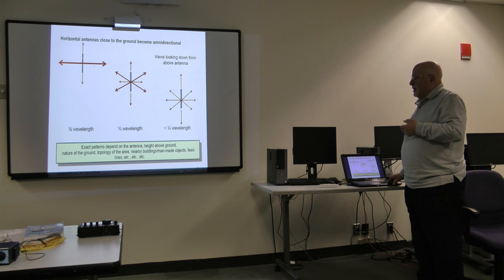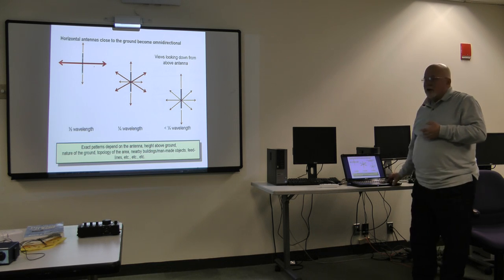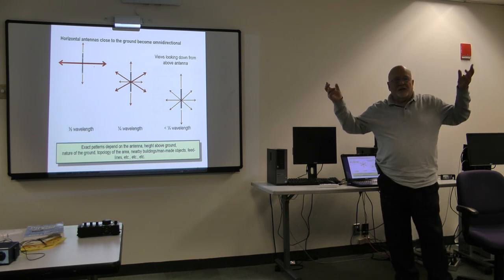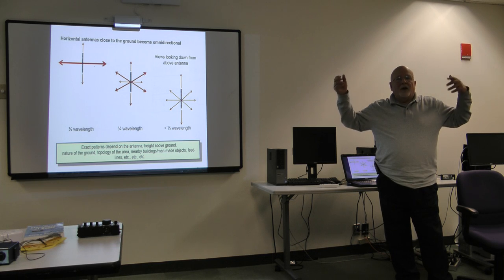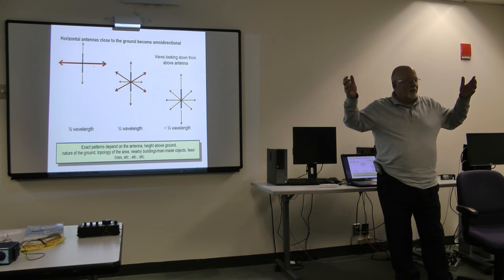Antennas close to the ground become omnidirectional. So if you put up an antenna that's only 10 or 20 feet above ground, you have an omnidirectional horizontal antenna, 10 or 20 feet above ground. You have an omnidirectional antenna that's very good for about a hundred mile radius.